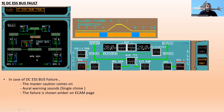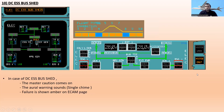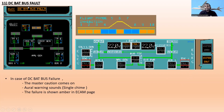The next one is DC essential bus fault. In case of DC essential bus failure, master caution comes on with a single chime oral warning, and the failure is shown amber on the ECAM page — DC essential bus fault. The next one is DC essential bus shed. In case of DC essential bus shed, master caution comes on with a single chime oral warning, and the failure is shown amber on the ECAM page.